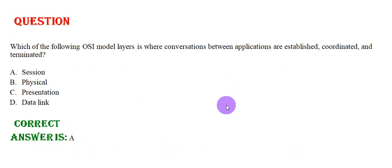Which of the following OSI model layers is where conversations between applications are established, coordinated and terminated? Option A: Session. Option B: Physical. Option C: Presentation. Option D: Data Link. The correct answer is Option C.